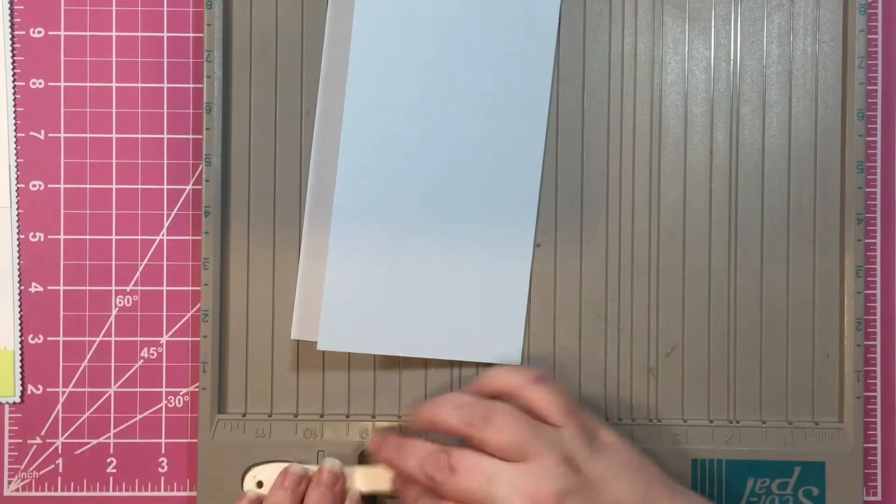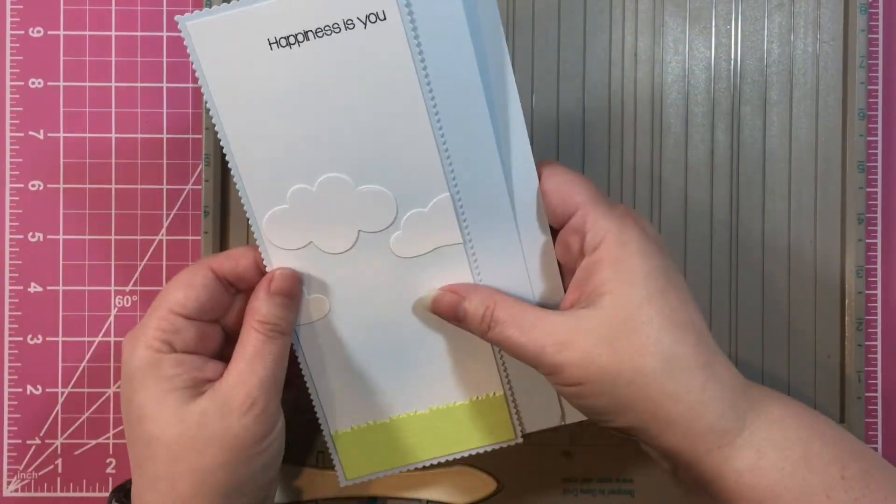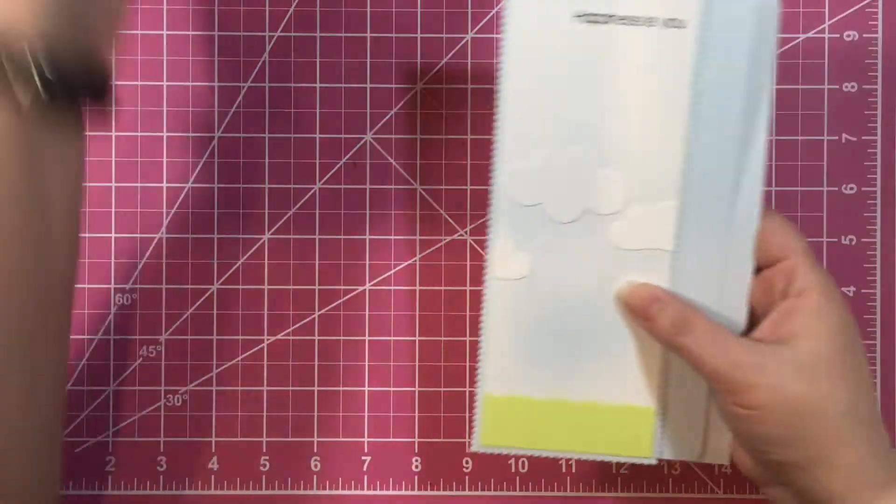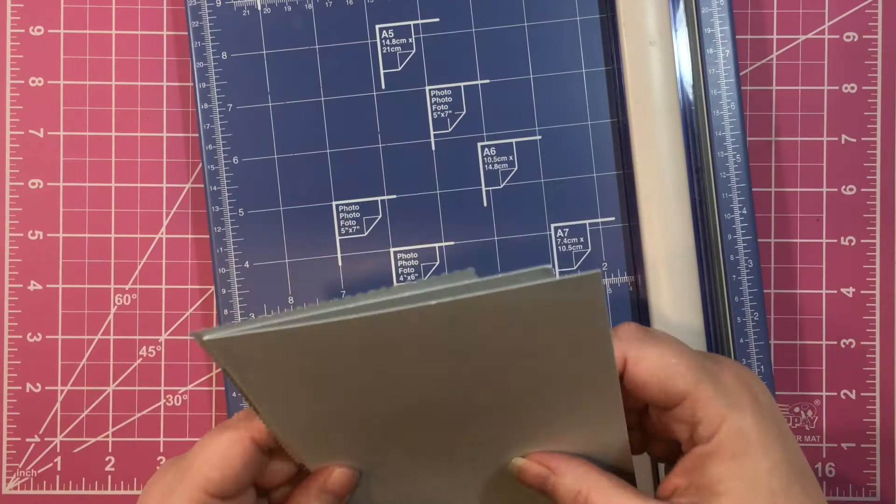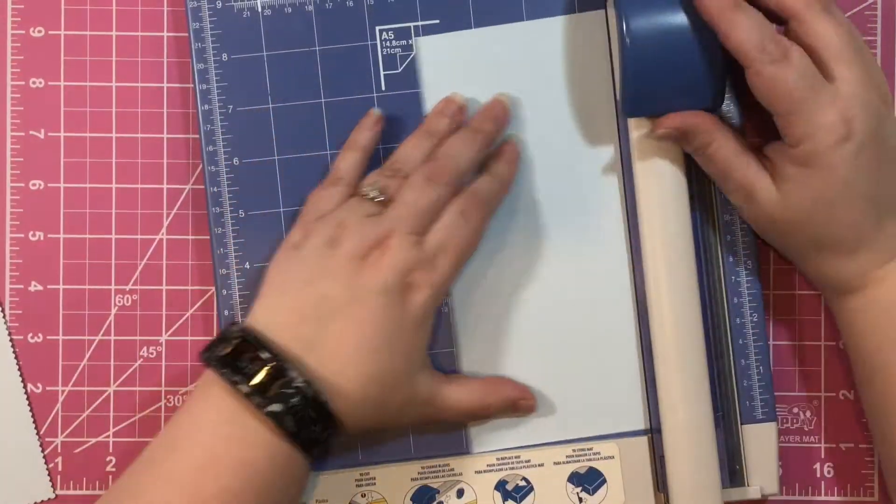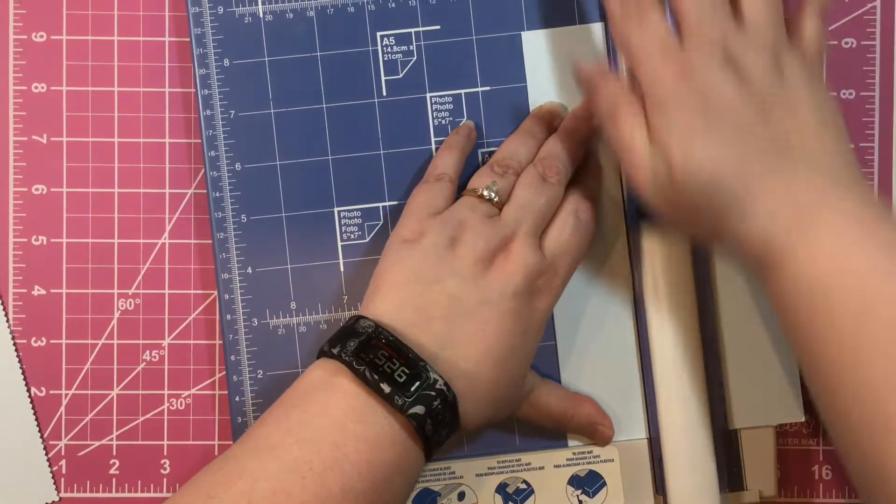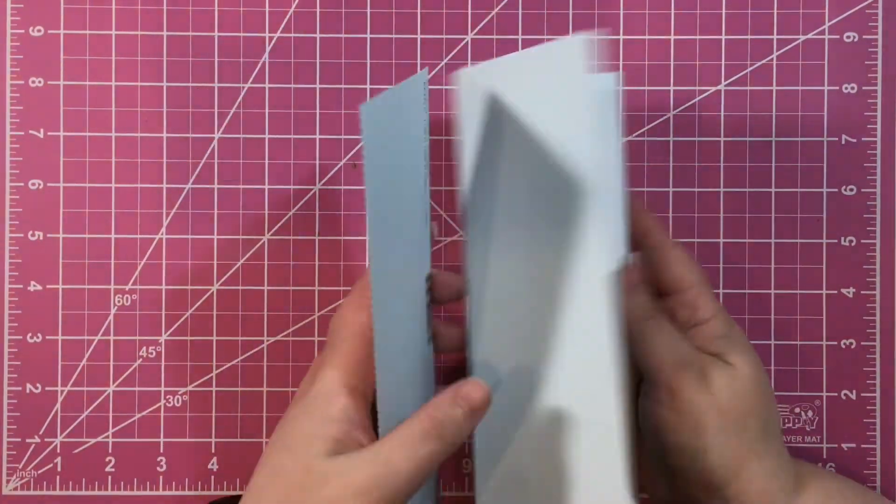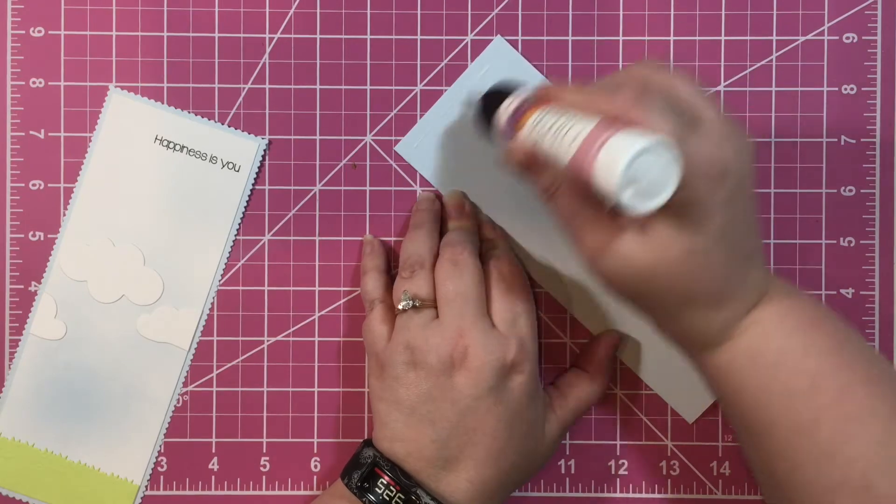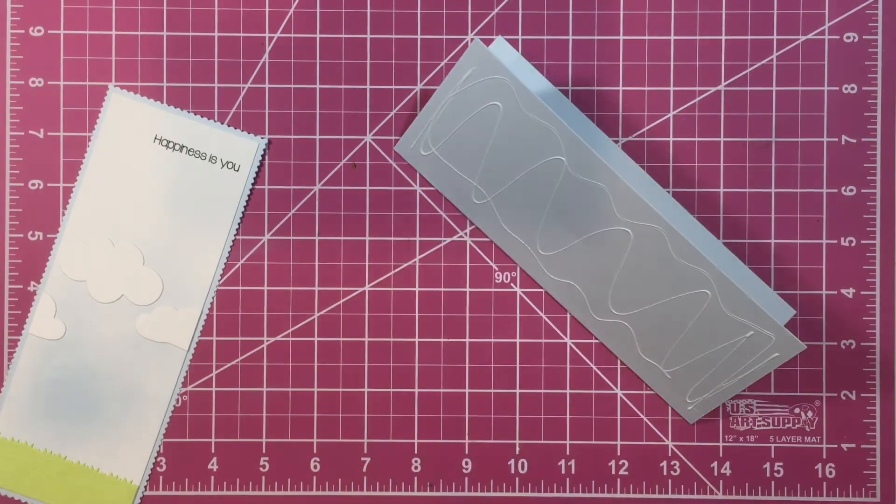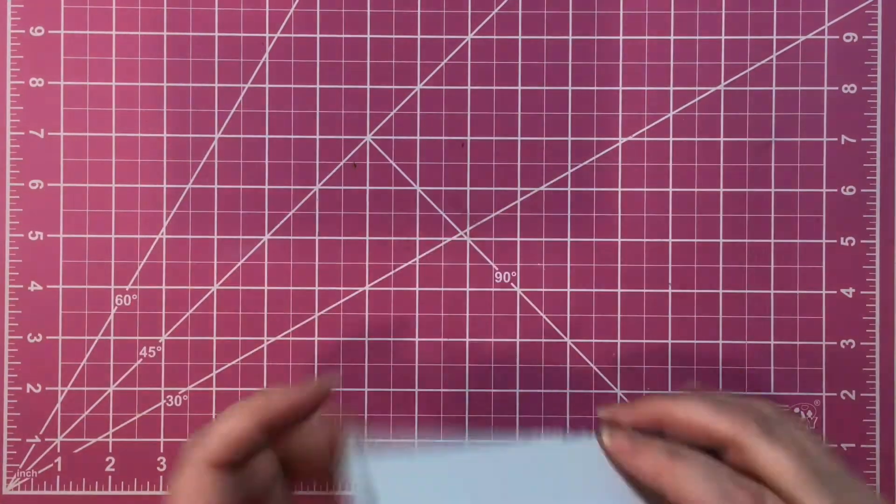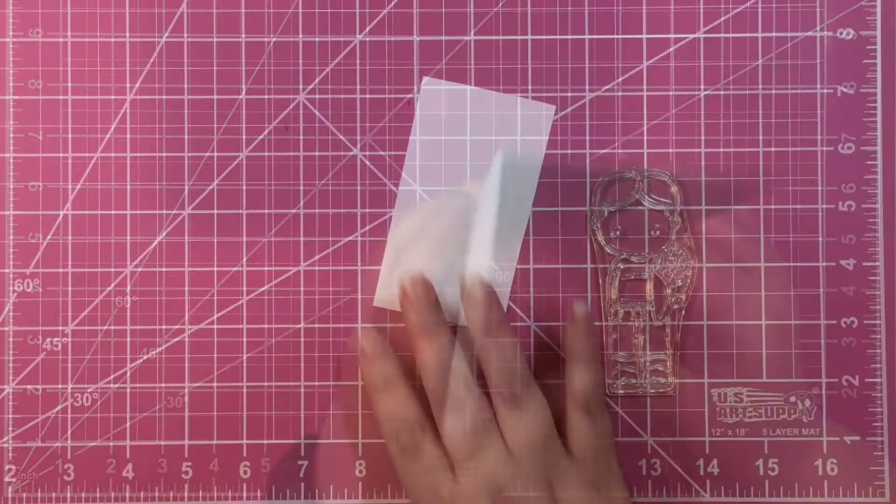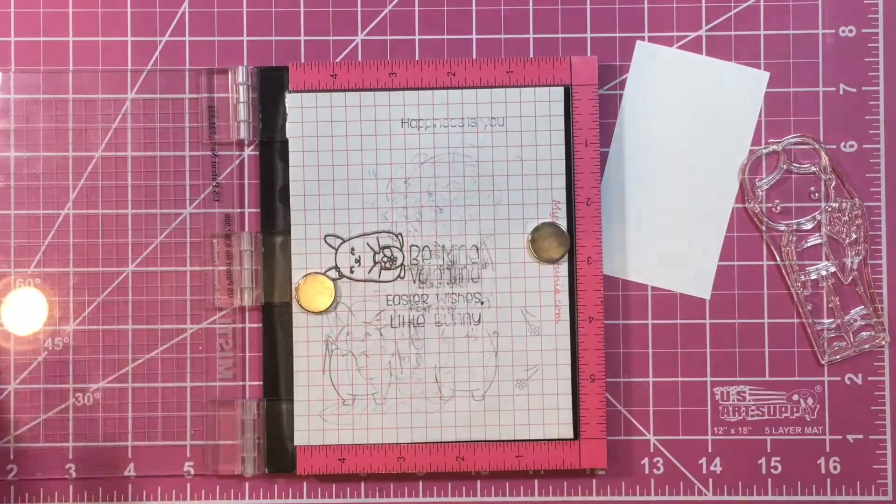I take my cardstock, fold it and get a nice crease, then match it up to my card and use a pencil to mark where I need to cut it off. I cut off the excess and glue it right onto my card base. As you see, it works just perfectly.